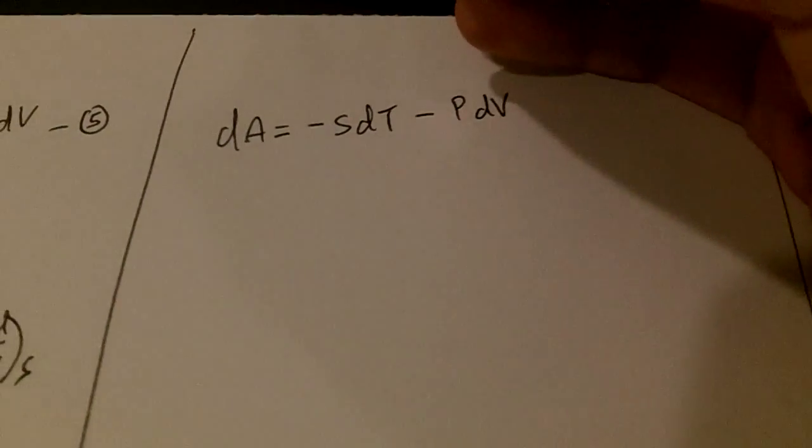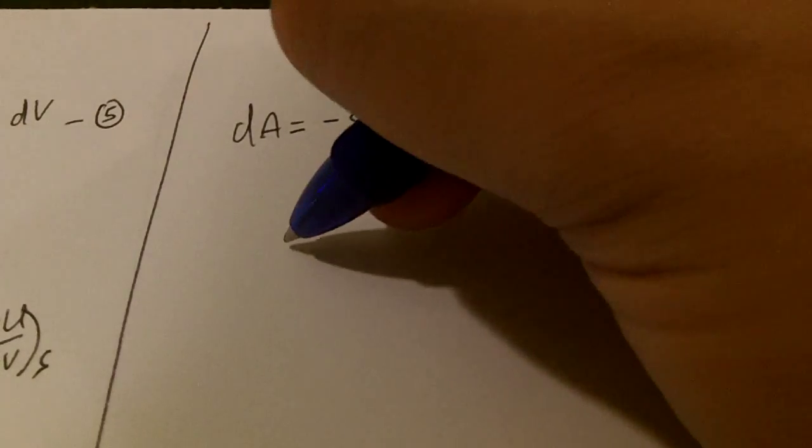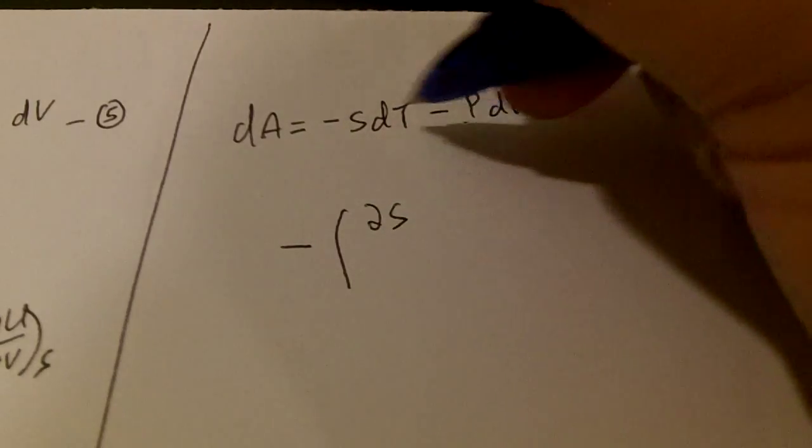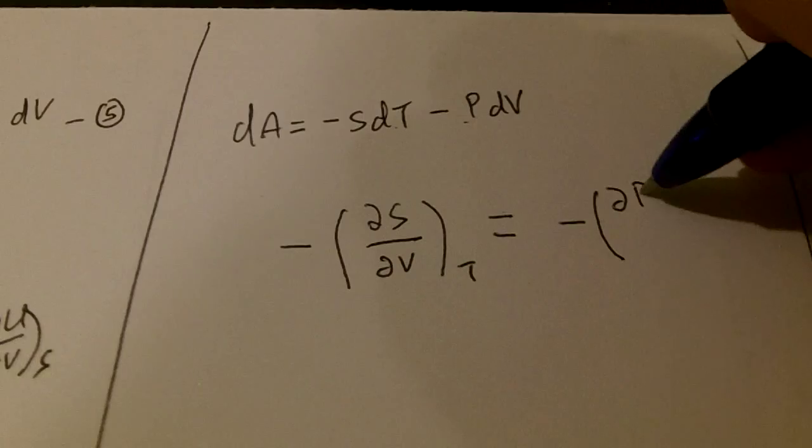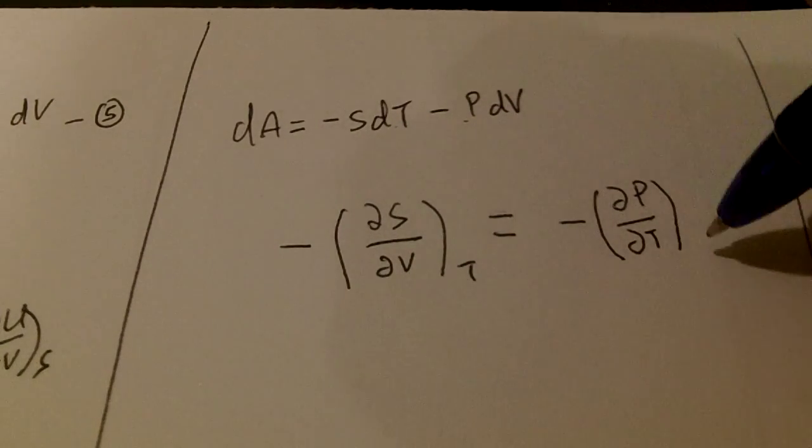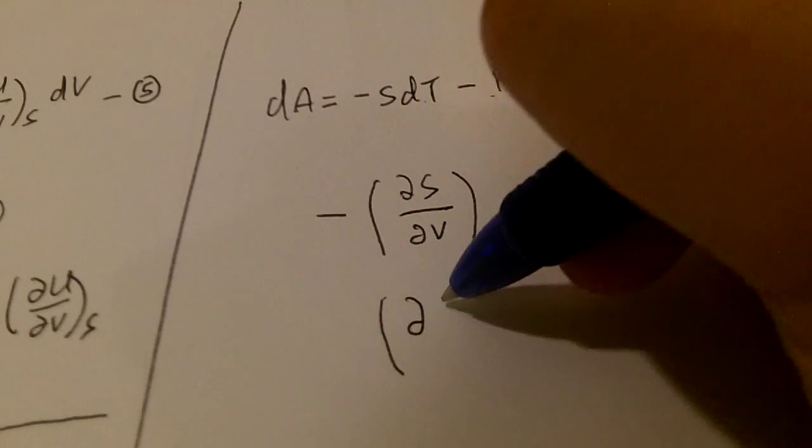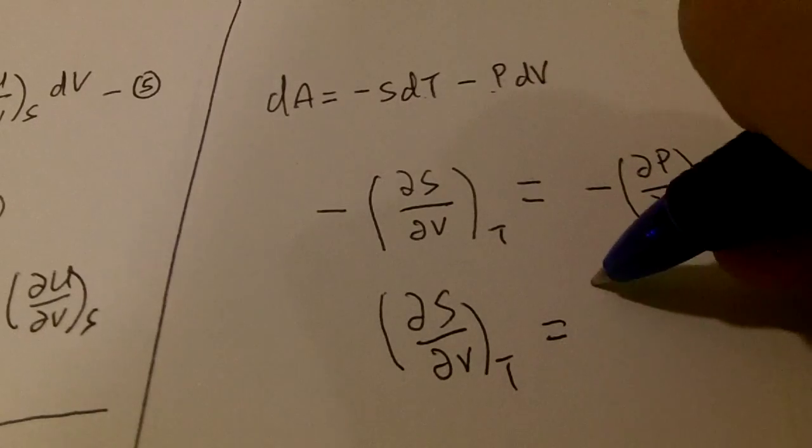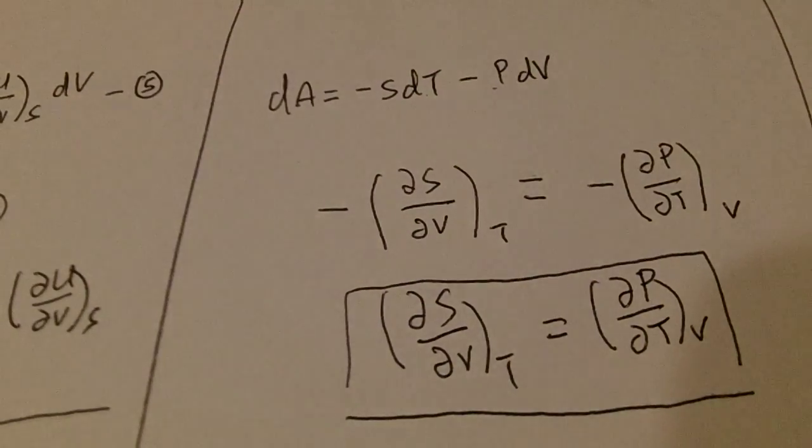Let's move on to our third relation with Helmholtz free energy. Now how do we derive this? dA equals to minus SdT minus PdV. Now we notice both of these properties here have negative signs. So we can actually just put this into our equation as follows. Del S del V, holding temperature constant, equals to negative del P del T, holding V constant. We just remove both of the negative signs and we will get our third thermodynamic relation.